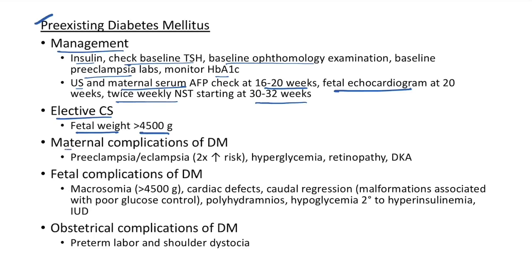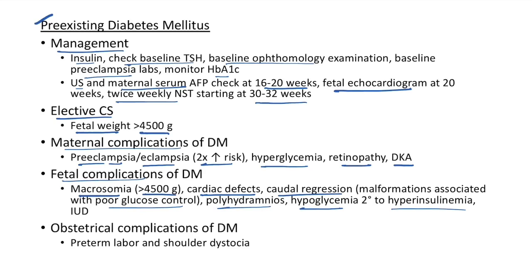Maternal complications of diabetes mellitus: preeclampsia or eclampsia (2× increased risk), hyperglycemia, retinopathy, and diabetic ketoacidosis. Fetal complications include macrosomia (baby >4500 g), cardiac defects, caudal regression (malformations associated with poor glucose control), polyhydramnios, hypoglycemia secondary to hyperinsulinemia, and intrauterine death. Obstetrical complications include preterm labor and shoulder dystocia.